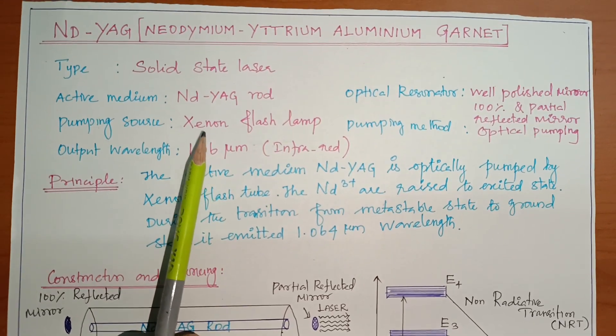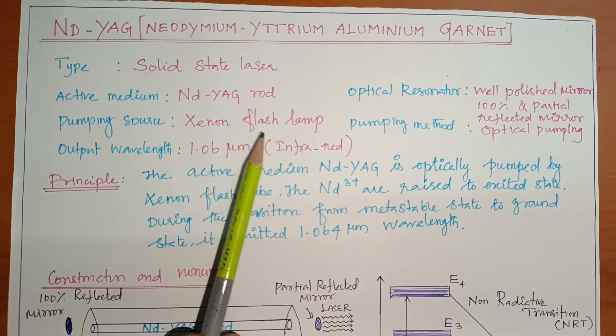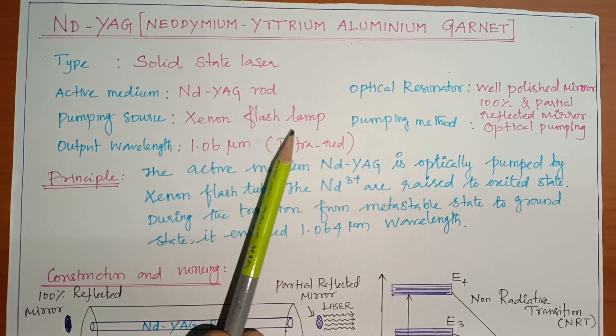Xenon flash tube is used. So inert gases use. So xenon, krypton, neon, xenon flash lamp are used.